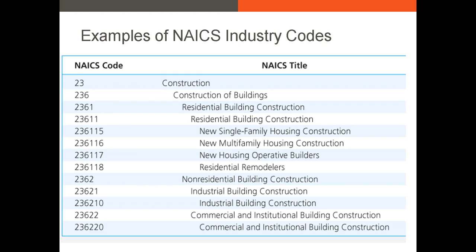Let's take a look at an example of NAICS codes. NAICS codes are a classification system and always have six digits. Let's say we have a company with a NAICS code of 236-210 — we can classify this firm as being in the industrial building construction industry. If we wanted to identify competitors with fairly similar operations, we might drop the last two digits and go to the four-digit NAICS code 2362, which is non-residential building construction. We could go further to the two-digit code 23, which is simply construction. NAICS codes allow you to get very granular with your industry comparison.